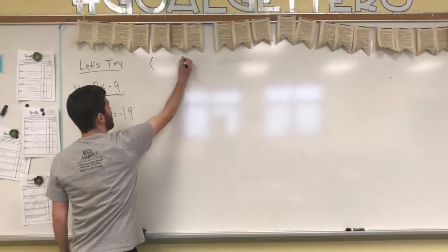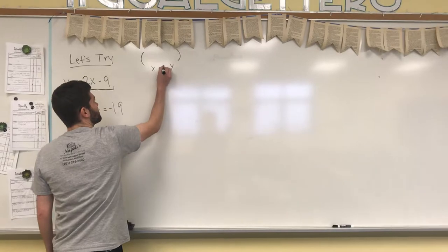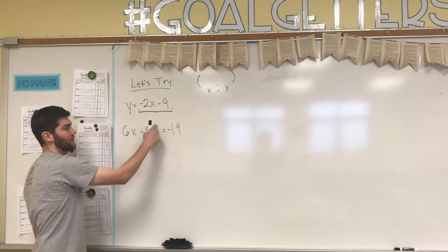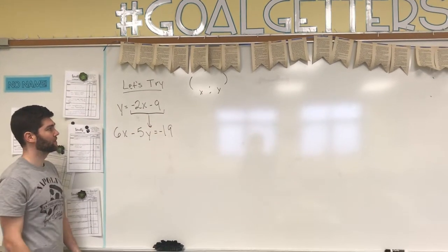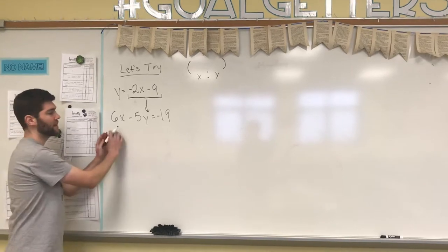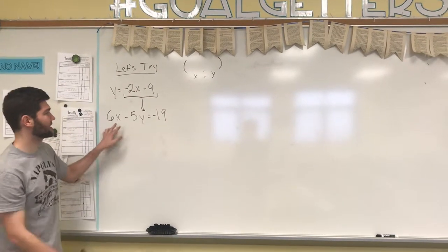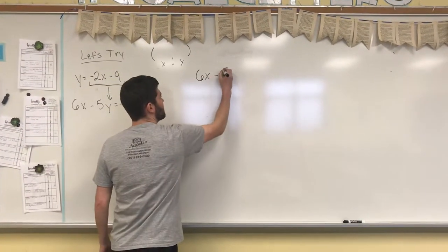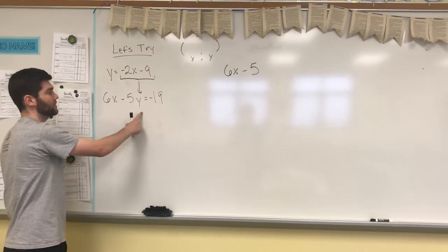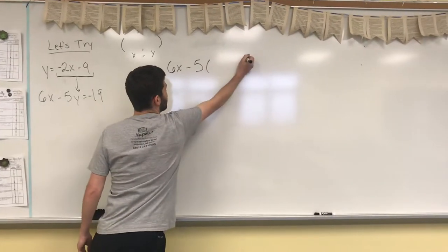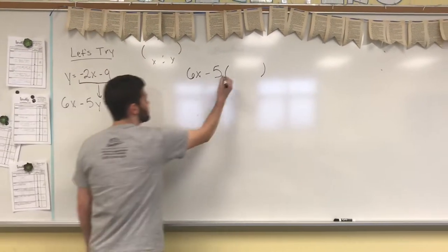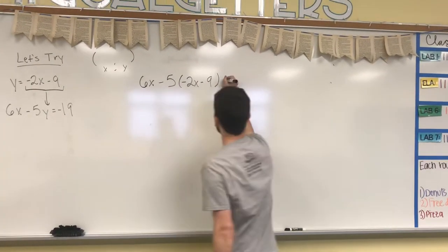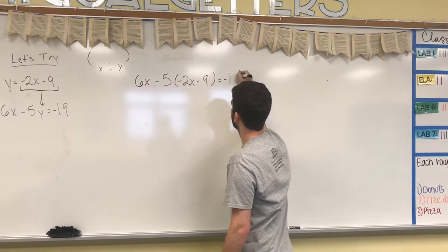Our solution will be the same, x and y. And because this is a y equals, I'm going to take all of this and plug it in for my y variable. I'm going to rewrite this whole thing but take out my y and put this into place. So I've got 6x minus 5, and because of this 5 and y touching, it means multiplication. So I'm going to take this 5 and multiply it by all of this. I've got negative 2x minus 9, and then equals negative 19.